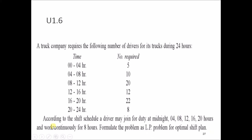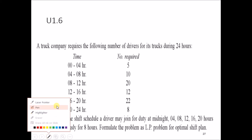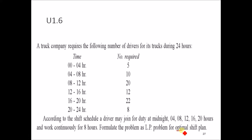If you see a keyword like 'optimal shift,' the problem is a minimization problem. To solve this kind of problem, we look at how many hours the drivers work continuously — here it is 8 hours. We use these 8-hour slots: 0 to 4 is a 4-hour block, and 4 to 8 is an 8-hour block. We define variables x1, x2, etc., based on these shifts.